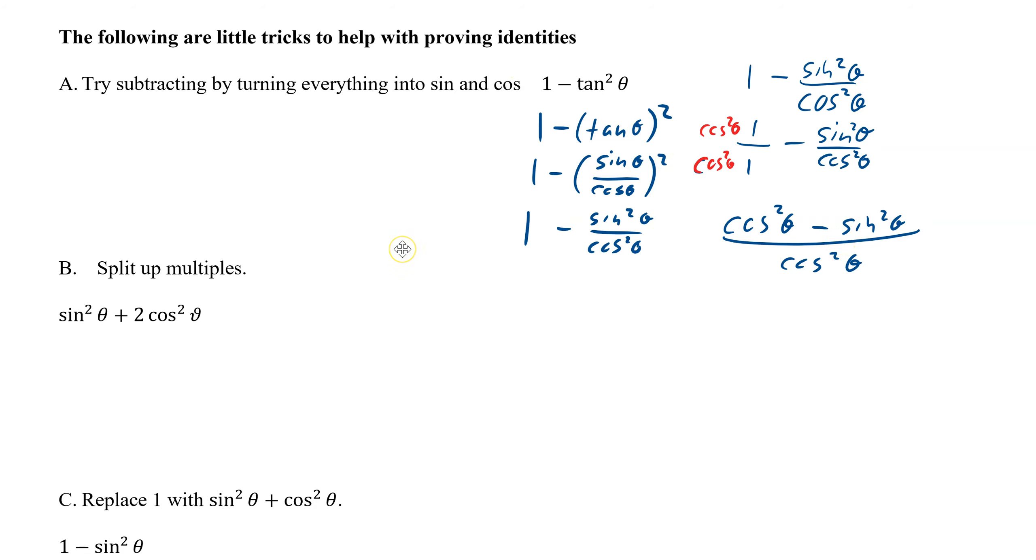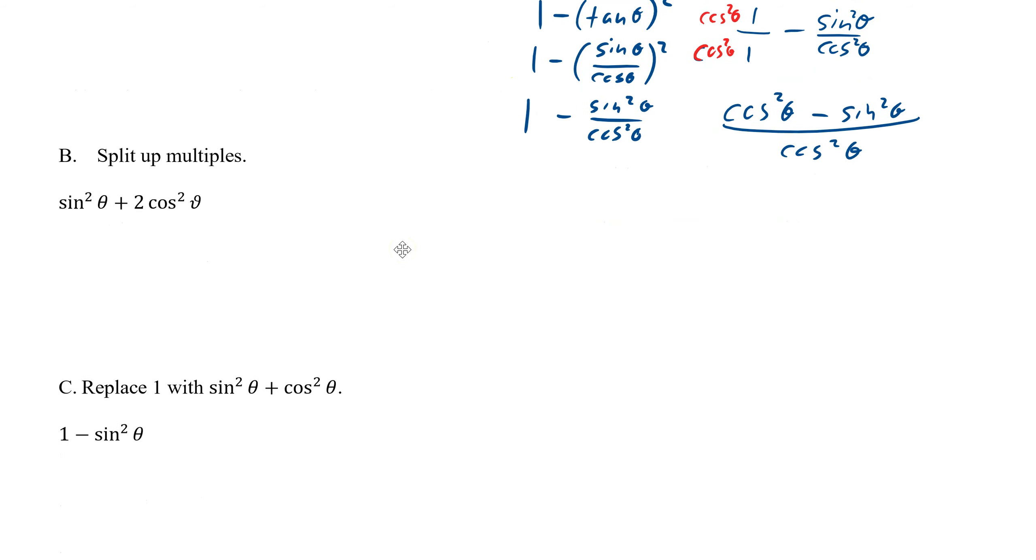Remember, you try it. If it doesn't work, you move on to something else. The other one is to split up into multiples. When you see a number in front of it, a quantity, that means you have that many of them. We here have two cosine squared thetas, so we can actually make it into two cosine squared thetas.